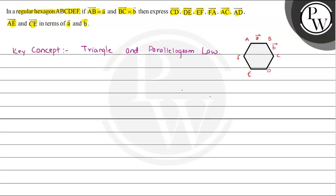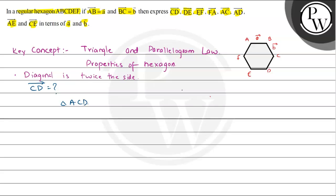To evaluate CD vector, we will be needing some properties of the hexagon. The most important property we will need is that a diagonal is twice the side — this diagonal corresponds to the line joining exactly opposite points. To evaluate CD vector, I will consider triangle ACD, and in triangle ACD: AC vector plus CD vector equals AD vector.